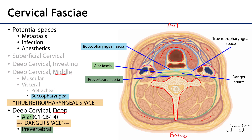This blue layer here — this light blue layer — is the buccopharyngeal fascia. That buccopharyngeal fascia is going to be found on the posterior aspect of the esophagus, and it's going to be the investing fascia of the posterior and lateral walls of the pharyngeal constrictor muscles, as we'll see shortly.